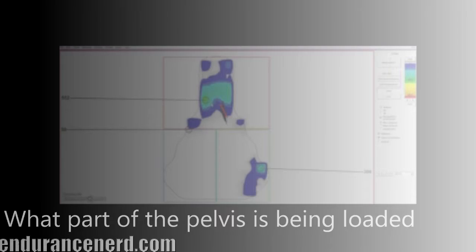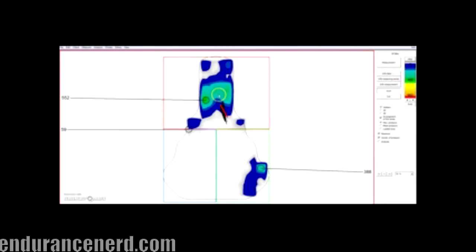We can determine what part of the pelvis is most loading. Clearly the anterior portion of the pelvis, closer to the pubic bone, is loading here in the front of the saddle, while she does have some loading towards the back of the saddle here closer to the sit bones. It really gives a good idea of what part of the pelvis is bearing the weight.